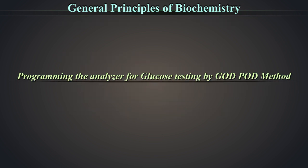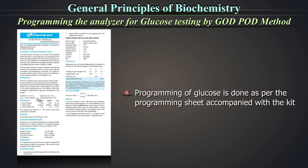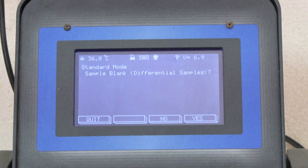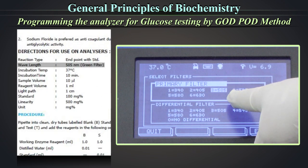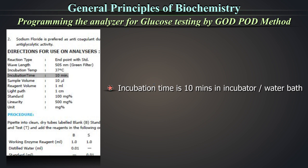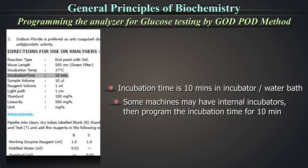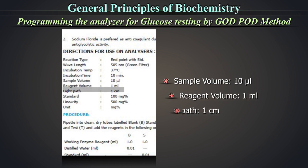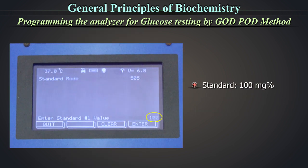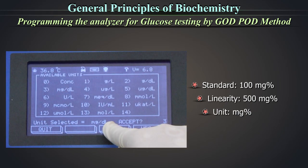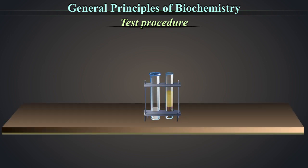Programming the analyzer for glucose testing: the programming of glucose is done as per the programming sheet accompanied with the kit. In this machine, go to the display screen and key in the following. From the mode menu, select single standard mode which is endpoint reaction. Select primary filter at wavelength 505 nm — green filter. Incubation temperature: 37 degrees Celsius. Incubation time is 10 minutes in incubator or water bath. Some machines may have internal incubators; then program the incubation time for 10 minutes. Sample volume: 10 microliters. Reagent volume: 1 ml. Light path: 1 cm. For the standard, feed the value specified on the kit insert — here it is 100 mg percentage. Linearity: 500 mg percentage. Unit: mg percentage. As blank, reagent and standard have already been run to get the calibration factor and the QC has been verified, we are now to run the test sample.